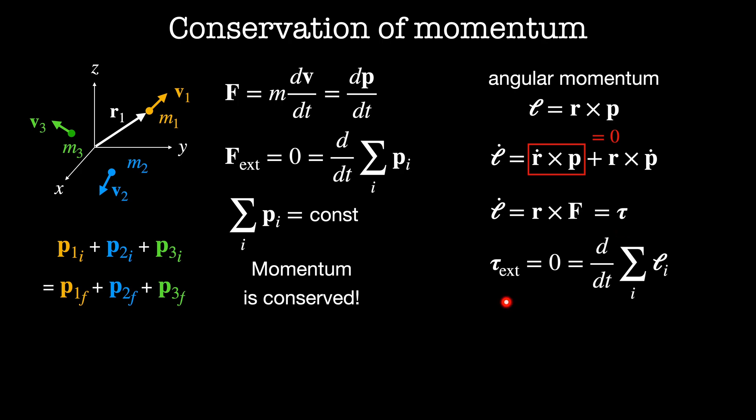If the sum of external torques on the system is equal to zero, then the rate of change of the sum of its angular momenta is also equal to zero. Or equivalently, the sum of angular momenta is a constant. That is, angular momentum is conserved.